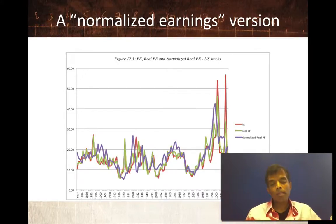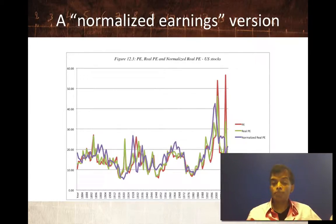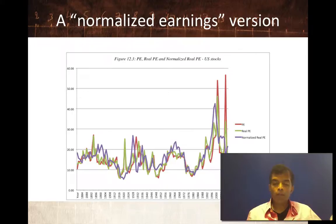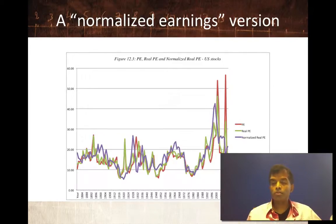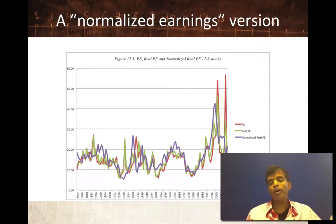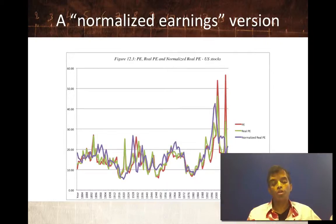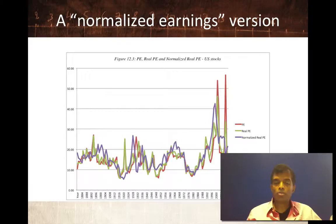This normalized real P/E is a number tracked by some analysts, and there's a range developed around it. The rules of thumb I've seen are: when the normalized number is between 14 and 16, stocks are fairly valued; higher than 16 means stocks are overvalued; below 14 means undervalued. People using normalized P/E have concluded that the normalized P/E in June of 2013 was about 23, well above that upper end of 16. So based on that comparison, stocks in June of 2013 look overvalued, and what follows is that you're going to have a bad period for stocks.